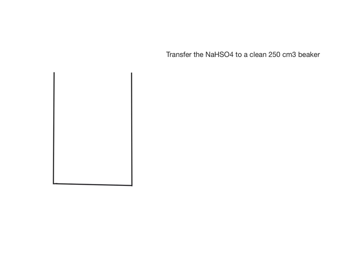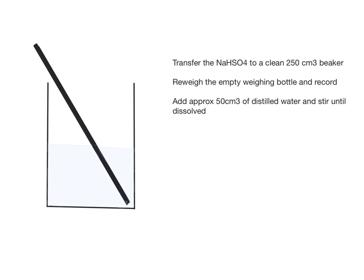Transfer the sodium hydrogen sulfate to a clean 250cm³ beaker. Before doing anything else, re-weigh the empty weighing bottle and record it. It may have a residue of sodium hydrogen sulfate left inside, so weighing it will tell you exactly how much you've used. Add approximately 50cm³ of distilled water.